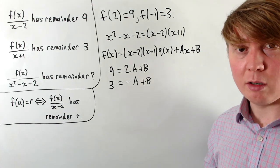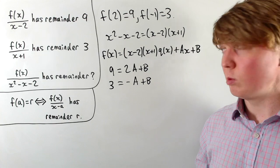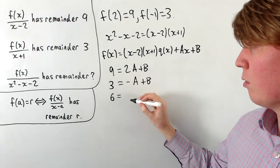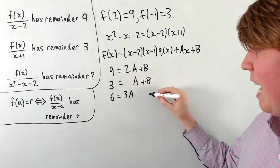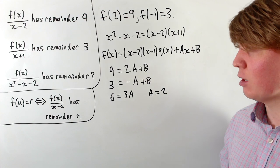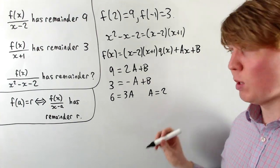So now we've just got a pair of simultaneous equations to solve. We could do the first equation minus the second equation, for example, which would give us 6 equals 3a, so we see that a is equal to 2. Then we can substitute this back into either equation, and we get b equals 5.